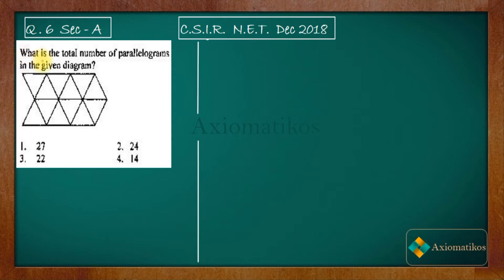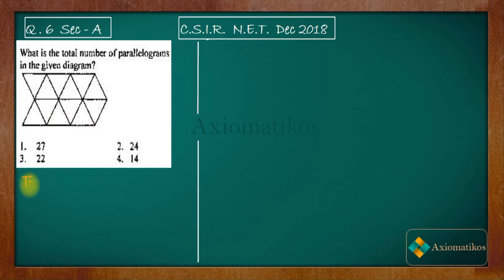The question asks for the total number of parallelograms in the given figure. This problem is very difficult unless you know the options. In the options, 27 is the biggest number, which means we have to target it — we have to try to find 27 parallelograms in this figure, otherwise we will always miss some. So my target is to find 27 parallelograms.